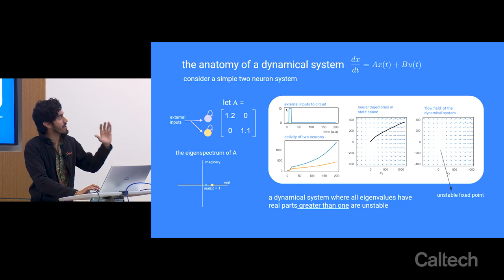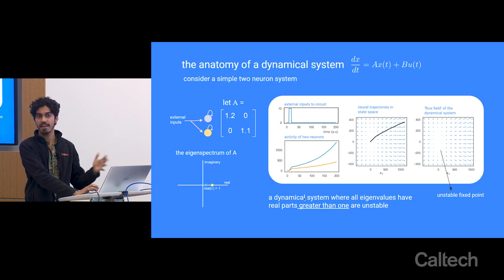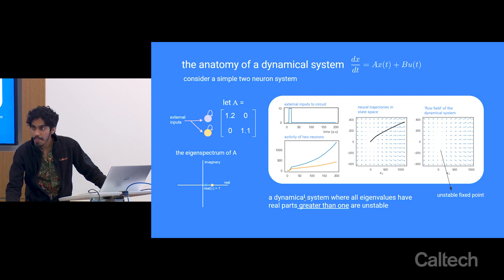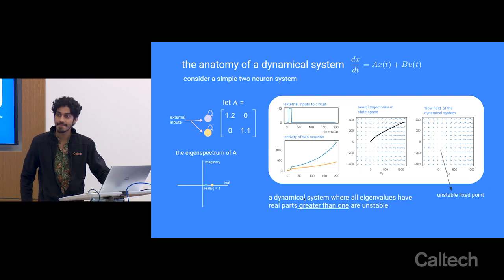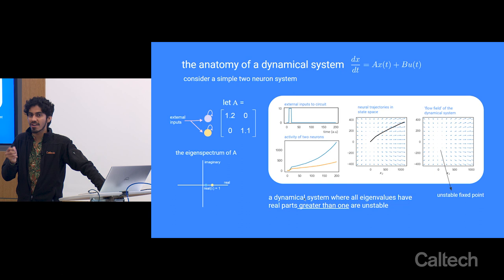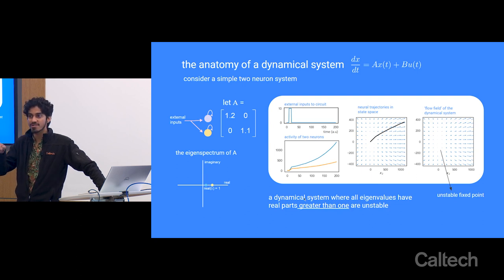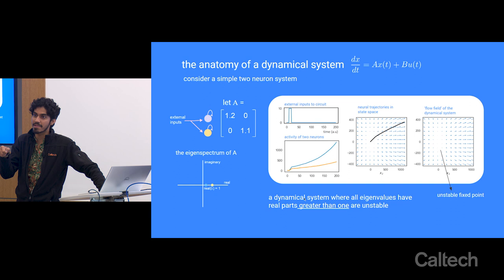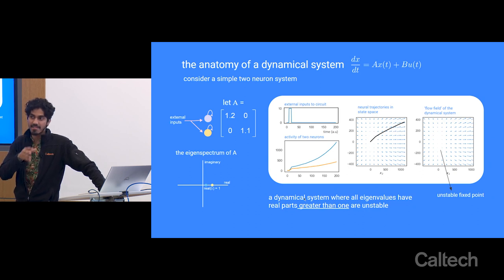Such a phase portrait reveals a fixed point, but one that is unstable. If you look at the eigenspectrum of this system, all its values are shifted to the right of the origin—real parts greater than 1—and systems like this are not stable. If you had A, you could simply look at the eigenspectrum and know the system has unstable dynamics. You don't have to look at flow fields or anything like that. An eigenvalue greater than 1 means unstable; less than 1 means stable.